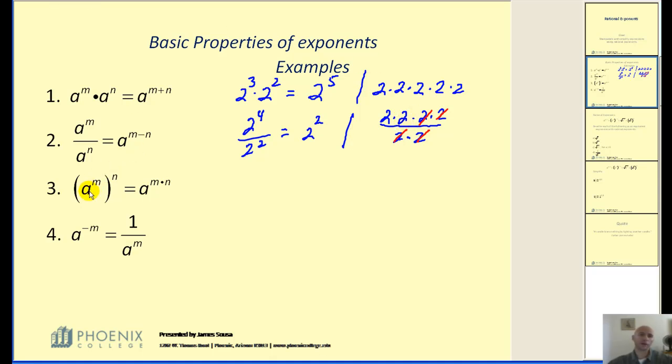Rule number three, if you have a power raised to a power, the rule is to multiply. So, for example, if I have three to the second power raised to the third power, the rule says I multiply two times three to get three to the sixth power.